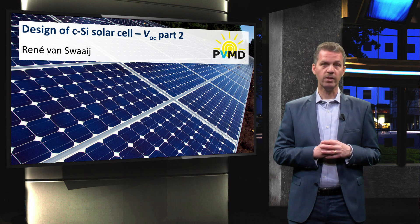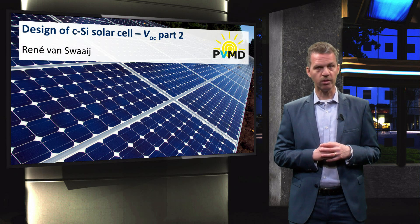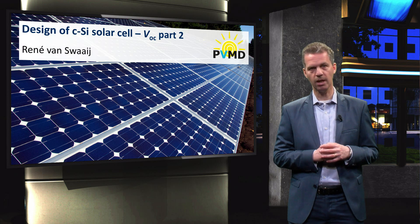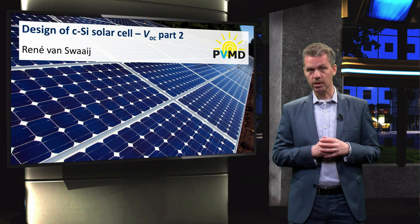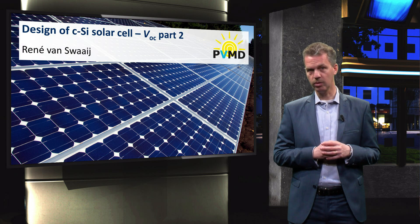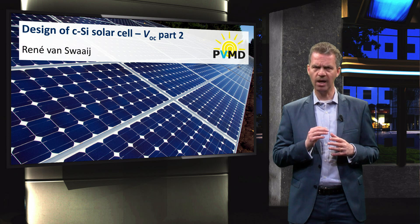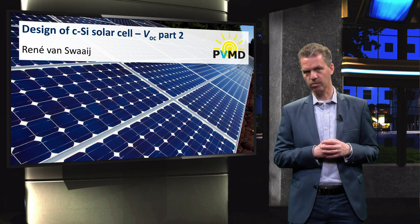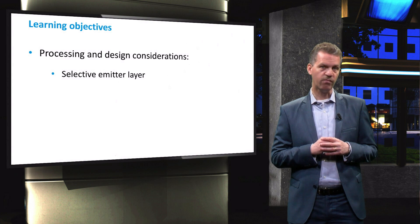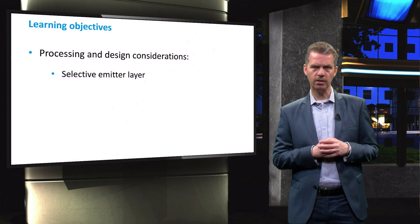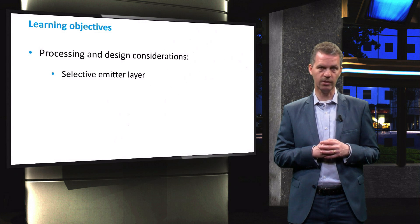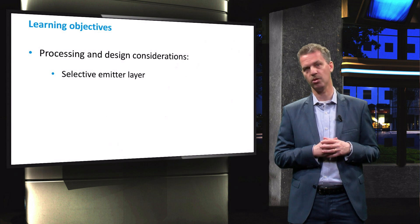In the previous video we showed how the open circuit voltage of a crystalline silicon solar cell is influenced by the minority carrier lifetime. We discussed how the recombination rate can be reduced by keeping the defect density in the material to a low level and by passivating dangling bonds at the surface of the material. In this video we will discuss several design solutions that can be implemented in crystalline silicon solar cells in order to increase this open circuit voltage.